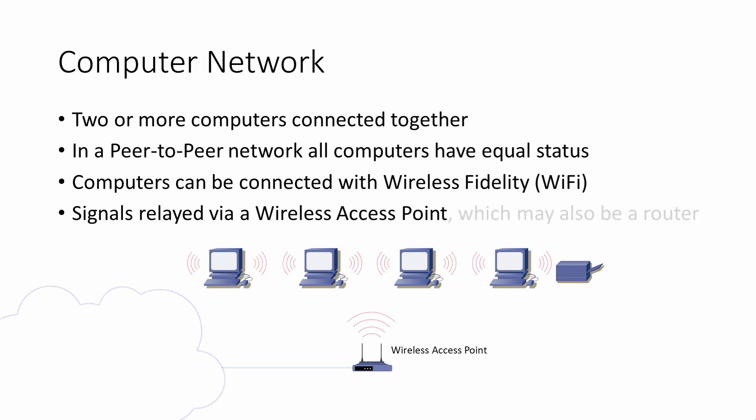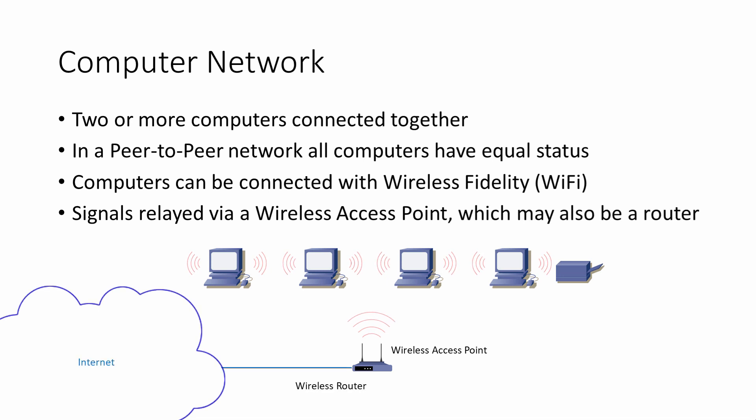The wireless access point is effectively a substitute for the backbone cable. If the wireless access point is connected to another network — for example, a much larger wired network or even the internet — then it's known as a router.